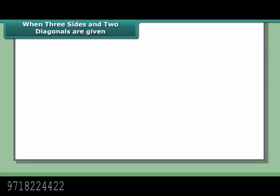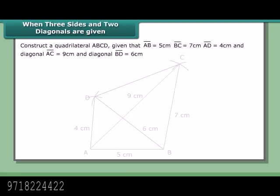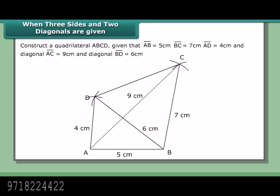When three sides and two diagonals are given, construct quadrilateral ABCD given AB = 5 cm, BC = 7 cm, AD = 4 cm, diagonal AC = 9 cm, and diagonal BD = 6 cm.